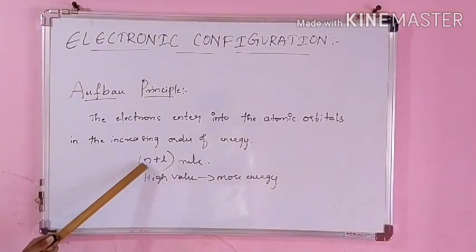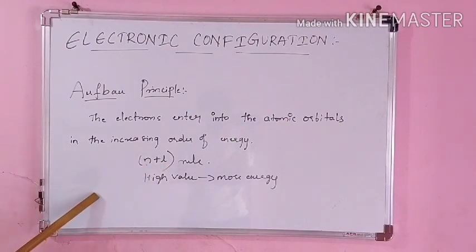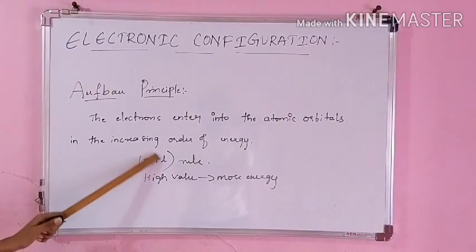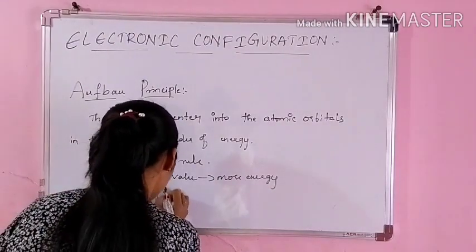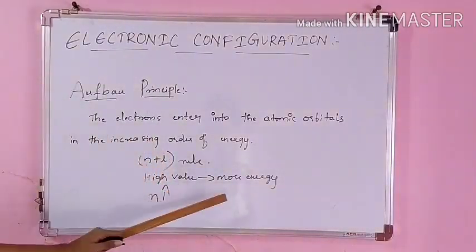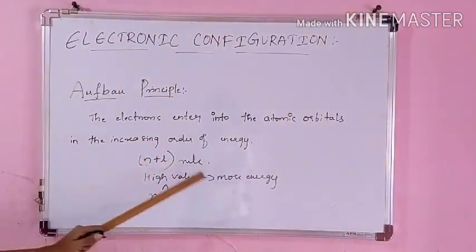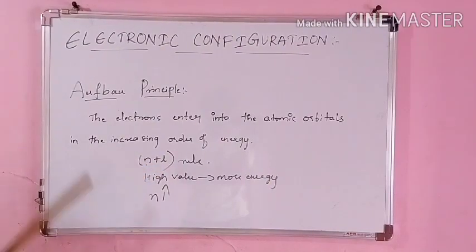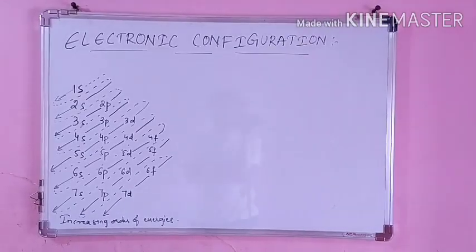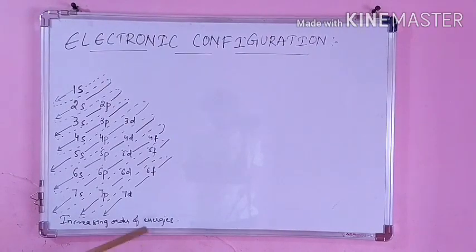If the n plus l value for two orbitals comes out the same, then we look at n — whichever has greater n will have more energy. Based on the n plus l rule, the increasing order of the energy diagram is plotted.